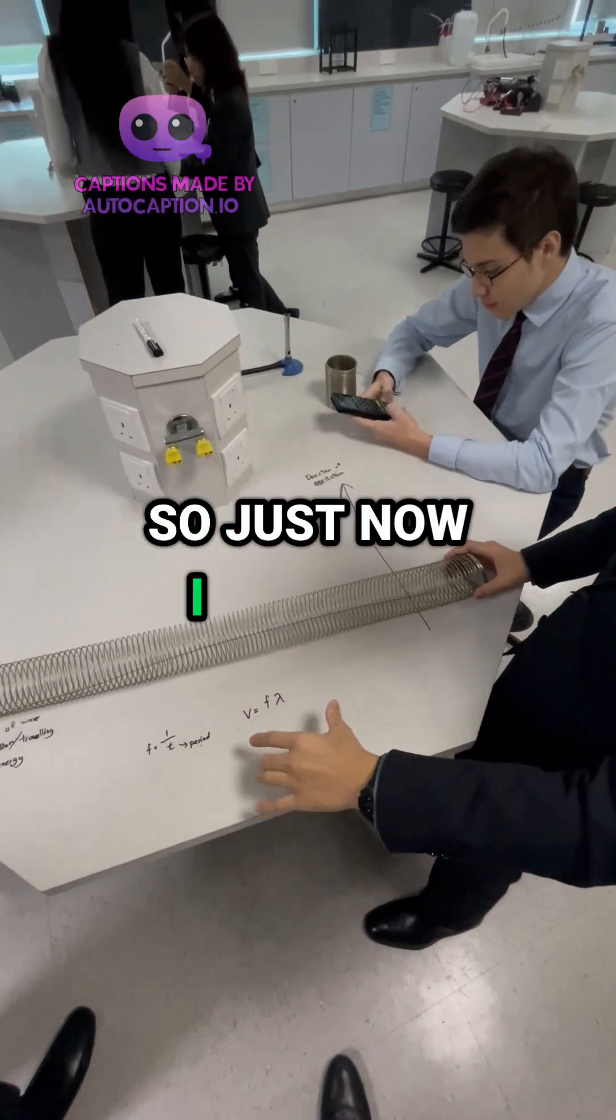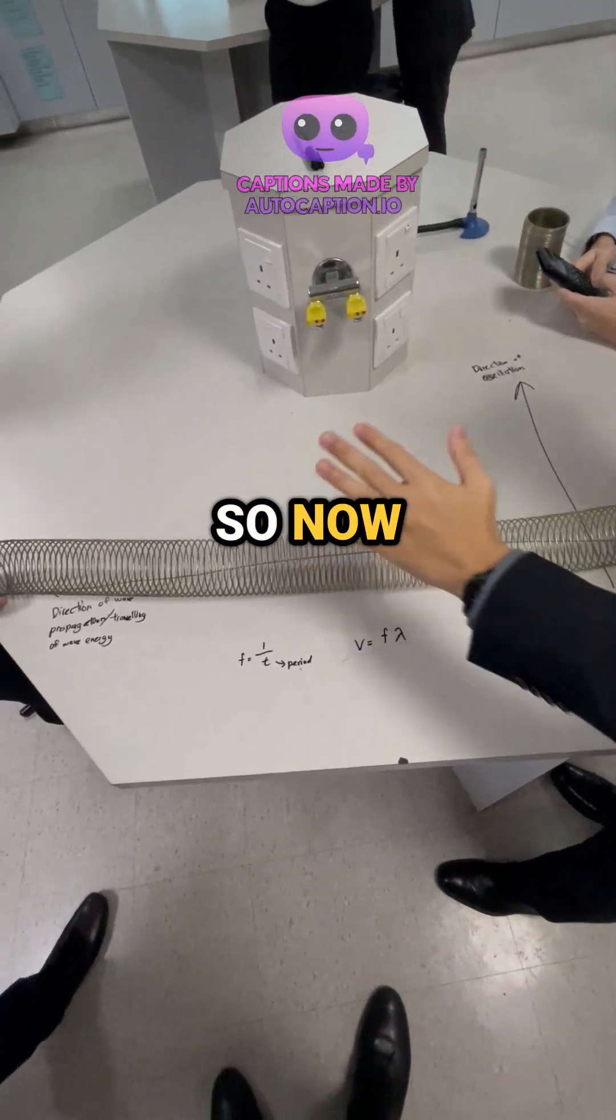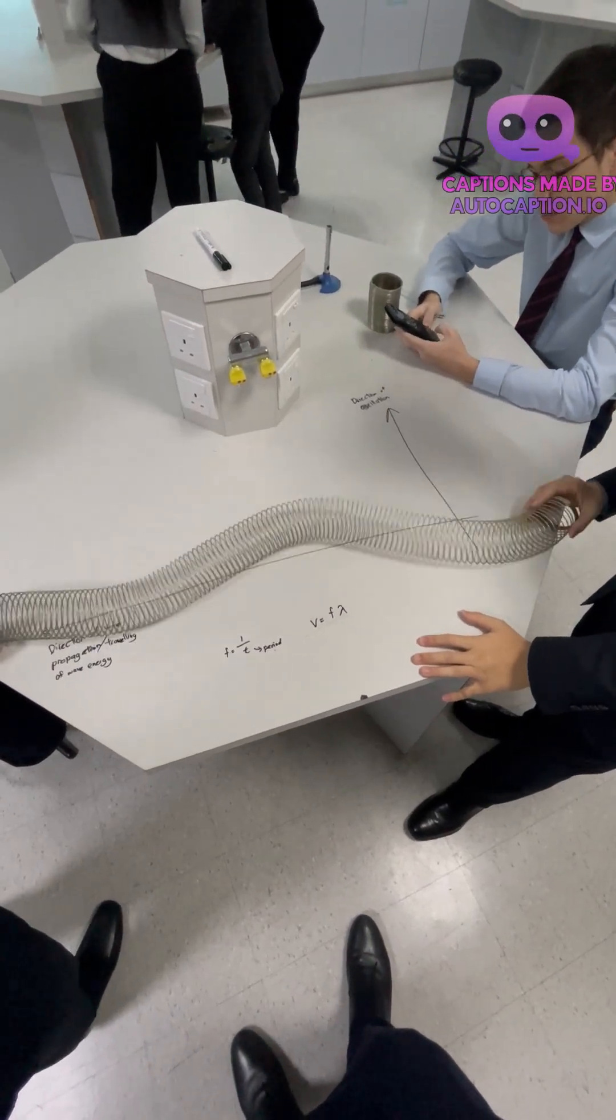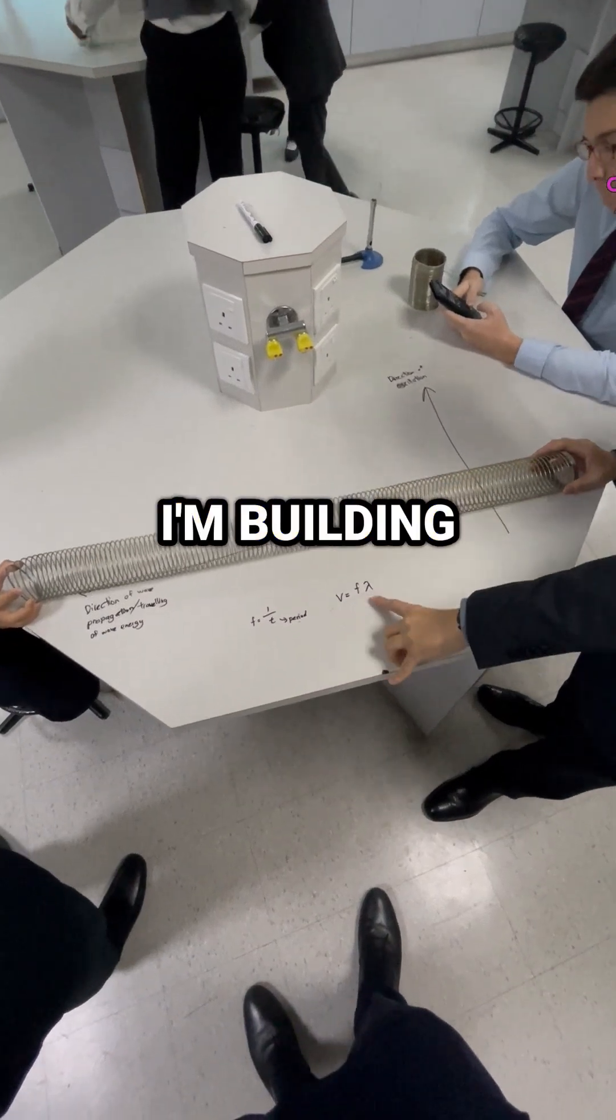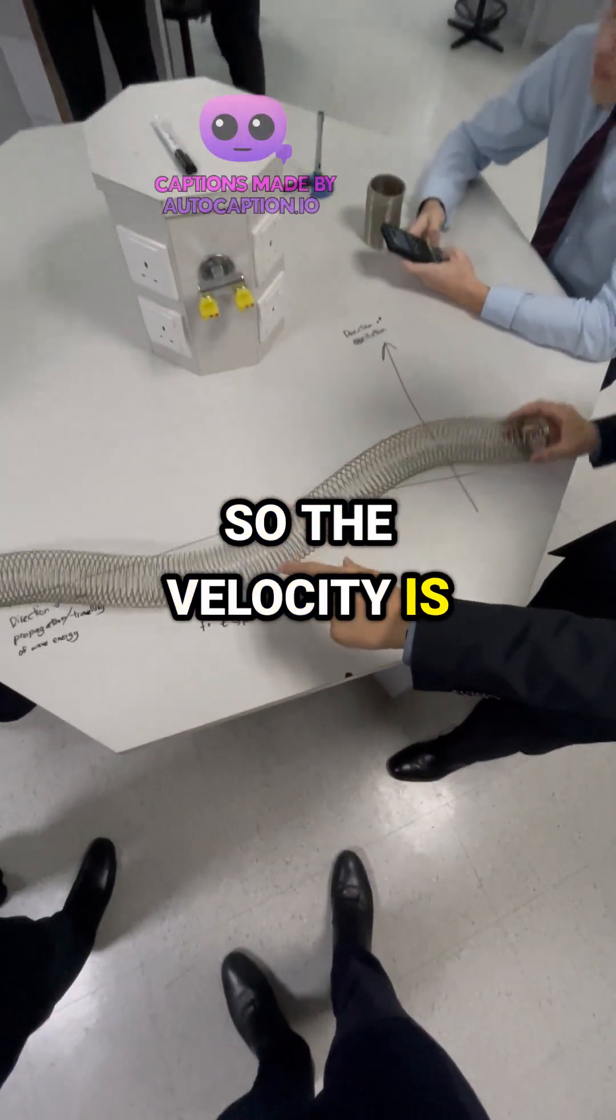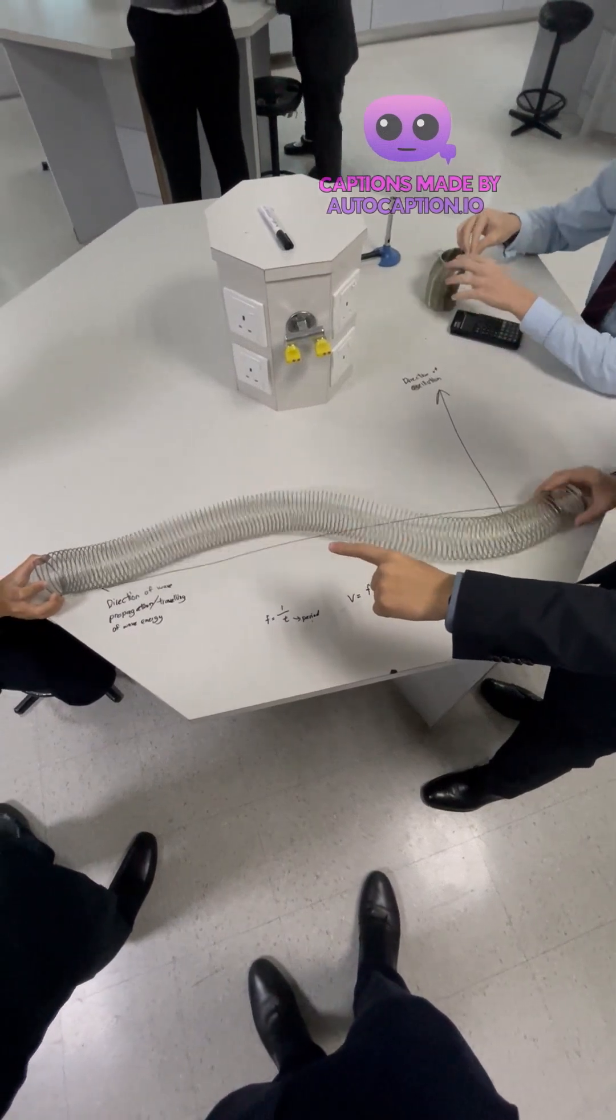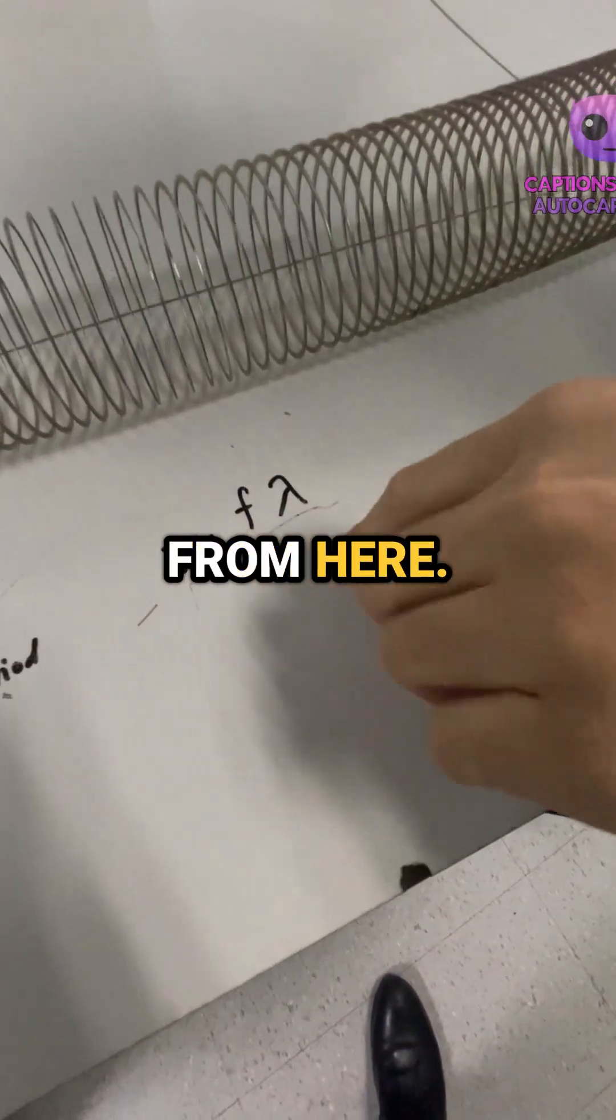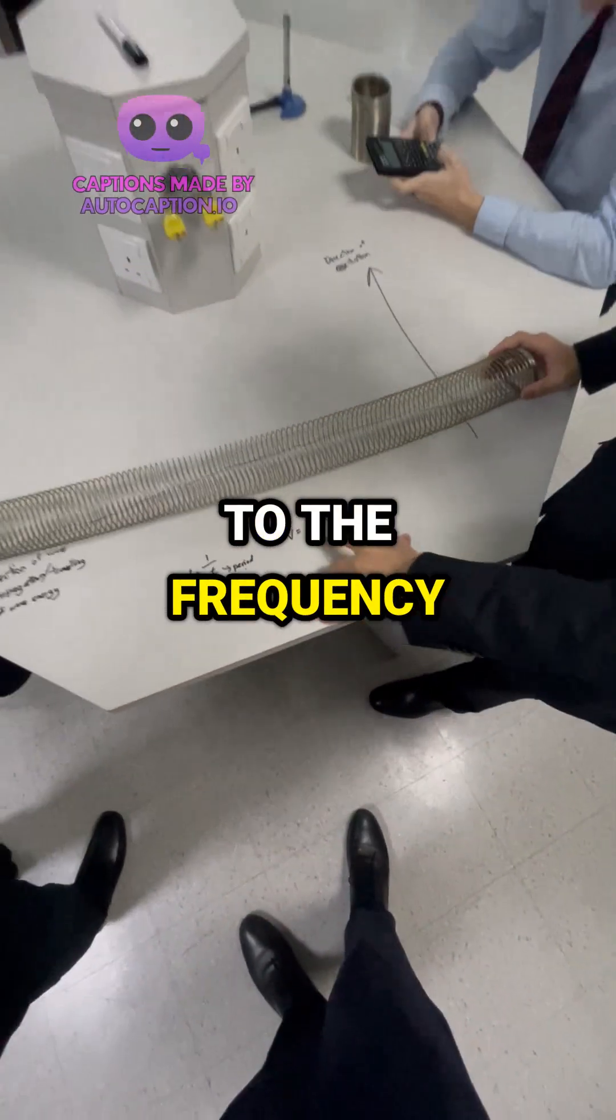So just now I only did one wave. Now let's try to make it continuous. Right now I'm doing a low frequency wave, so the velocity is also low. But the wavelength is very big because we can see from here, wavelength is inversely proportional to the frequency of the wave.